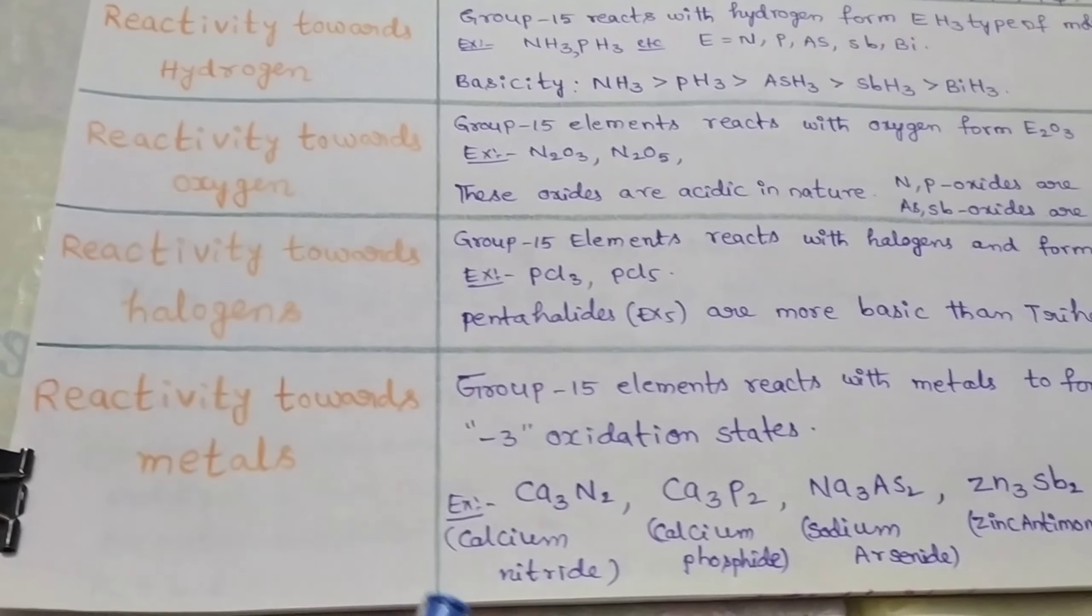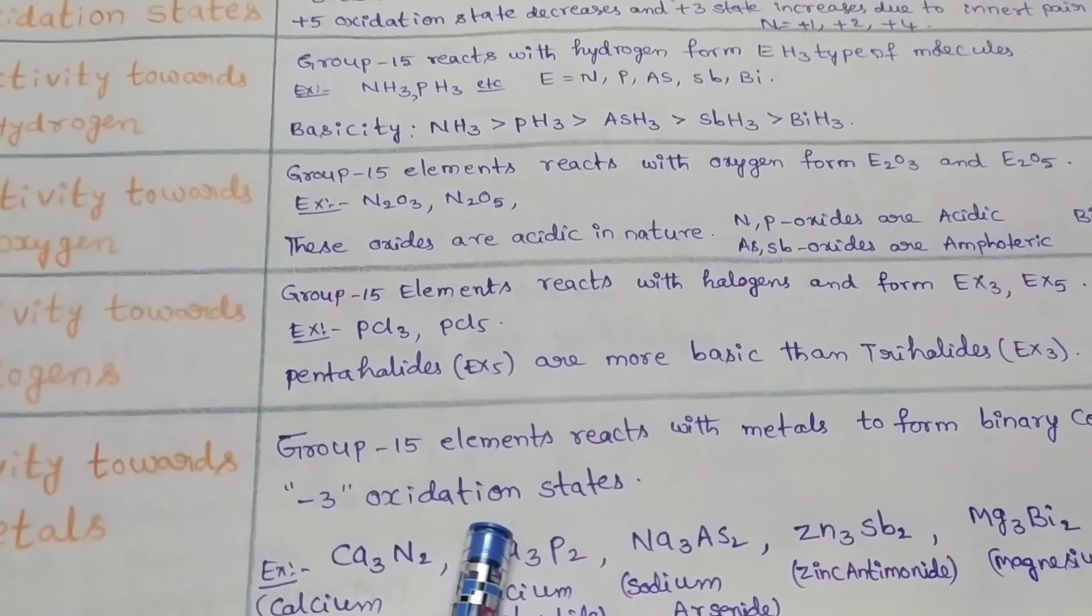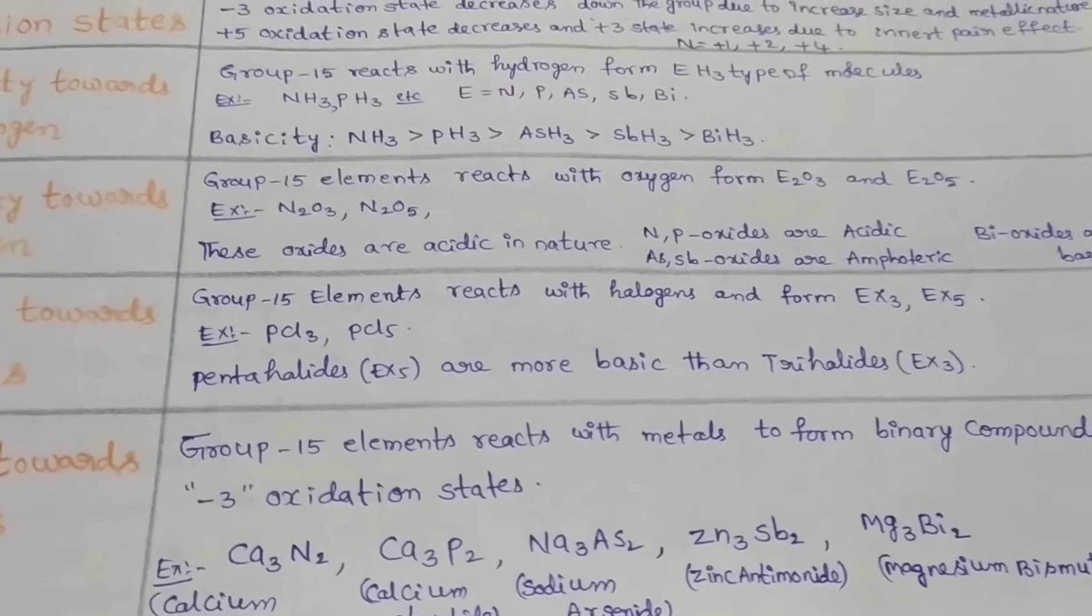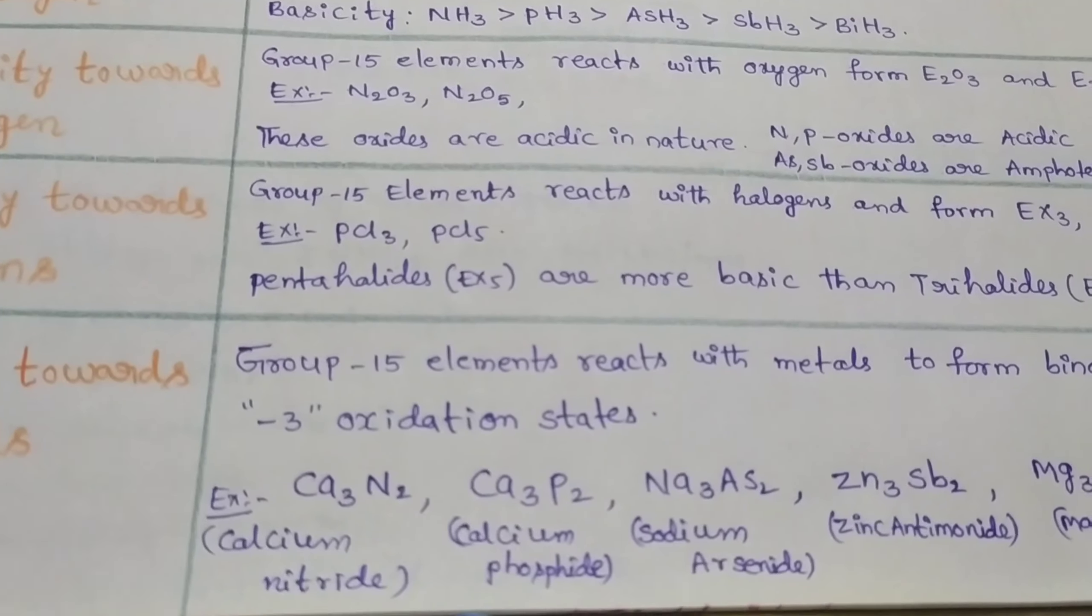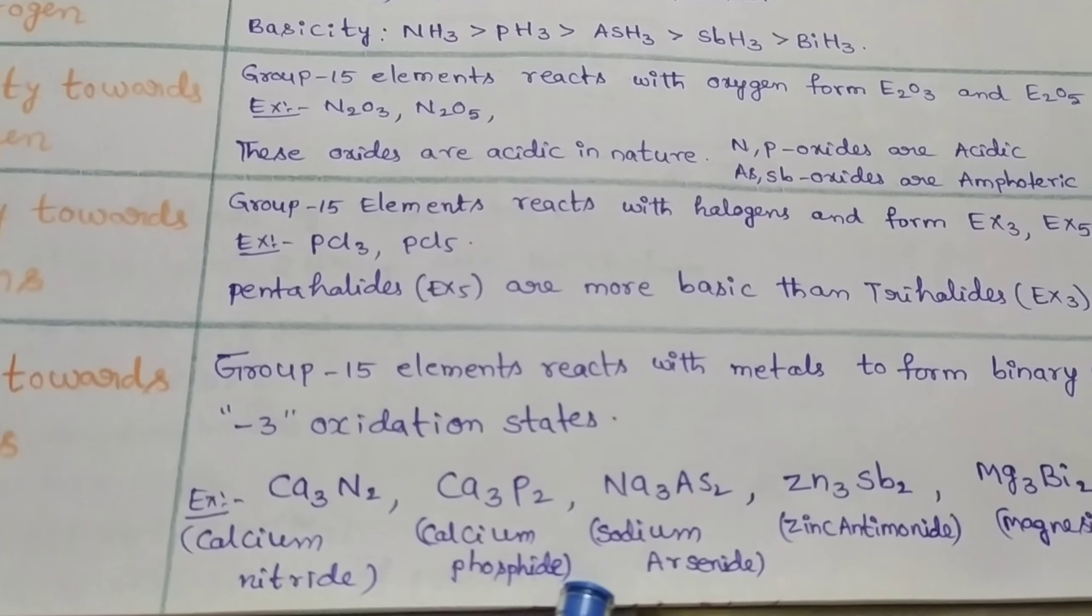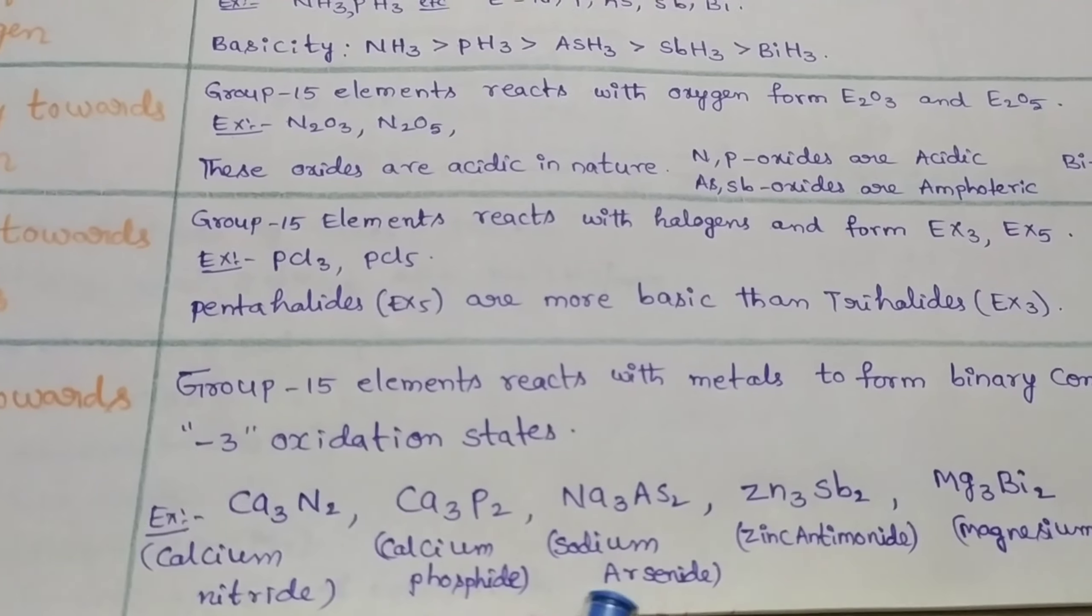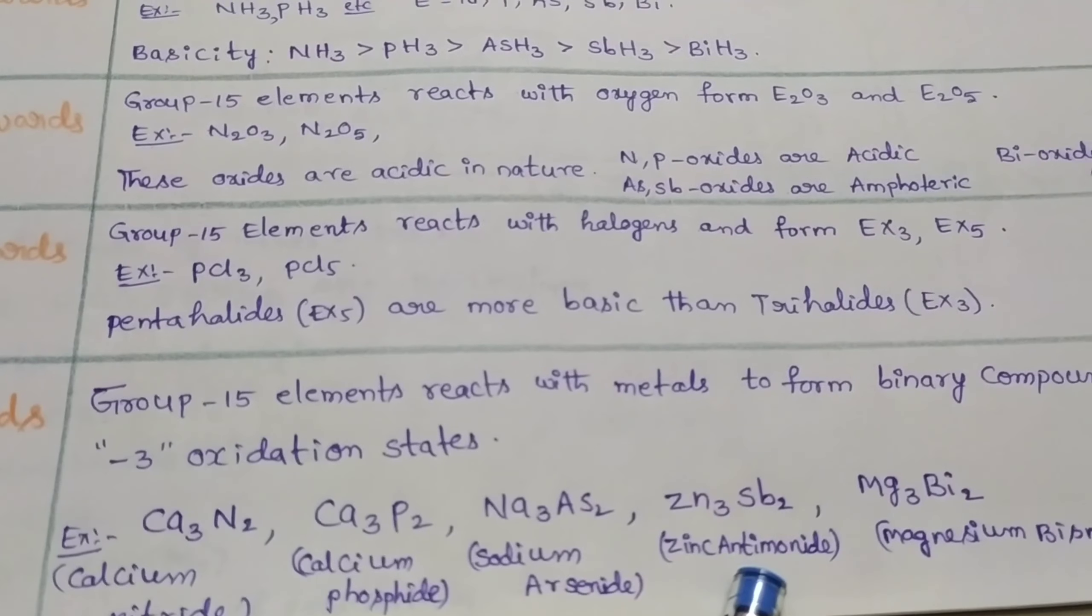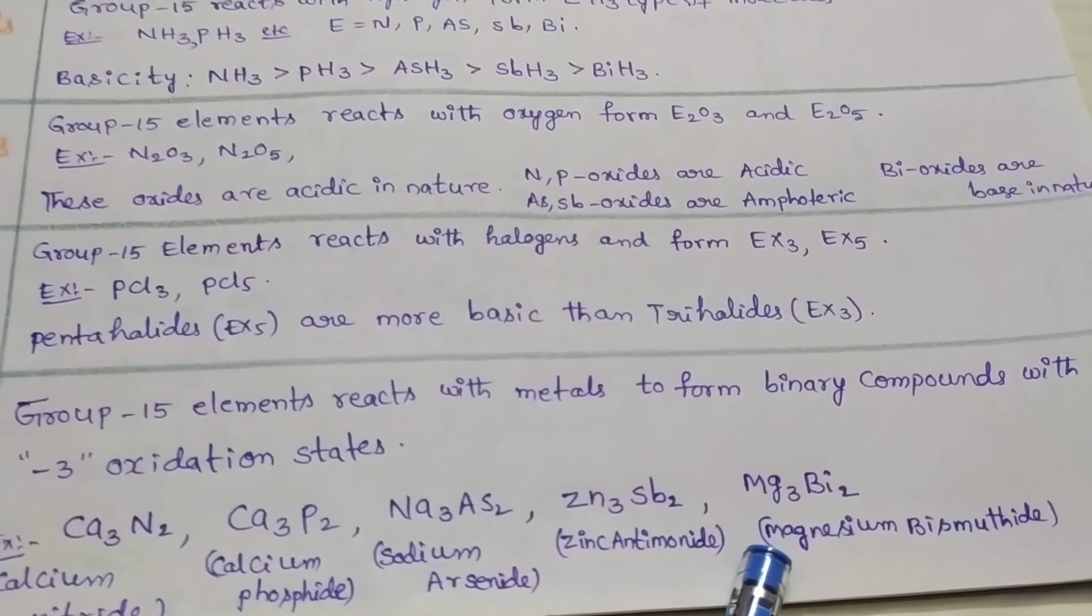Now we discuss the reactivity with metals. Group 15 elements react with metals to form binary compounds with -3 oxidation state. For example, calcium nitride Ca₃N₂, calcium phosphide Ca₃P₂, sodium arsenide Na₃As₂, zinc antimonide Zn₃Sb₂, and magnesium bismuthide Mg₃Bi₂.